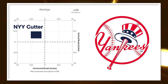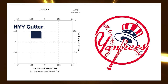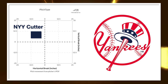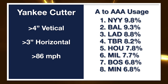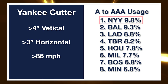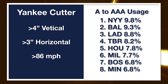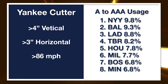My intuition from looking through minor league data was correct. The number one team in baseball in terms of using this shape in the minor leagues was the New York Yankees at 9.8% — one of only two teams above nine percent and more than double the MILB average usage of this shape. And thus the Yankee cutter was born.